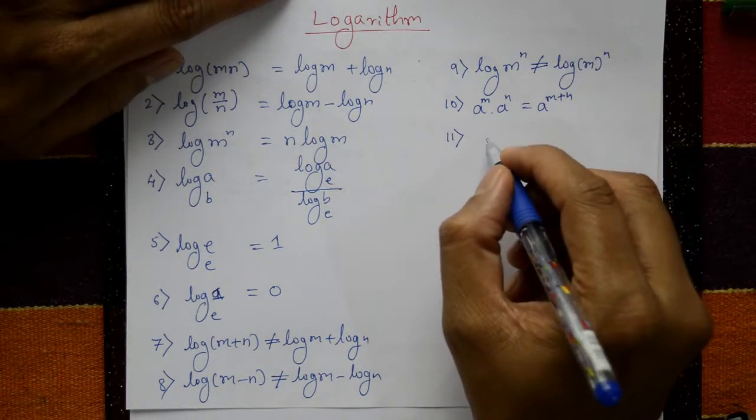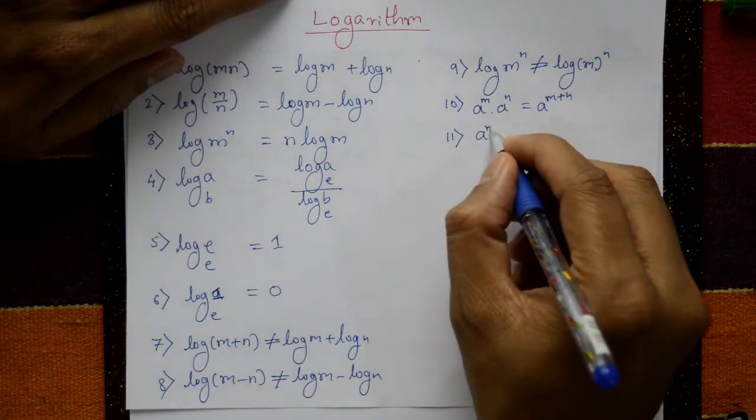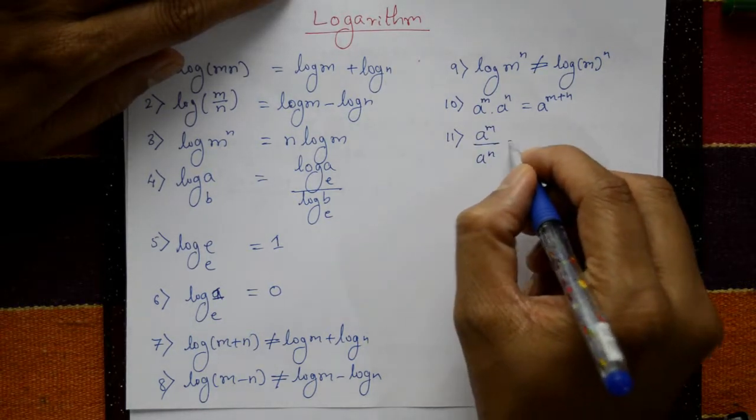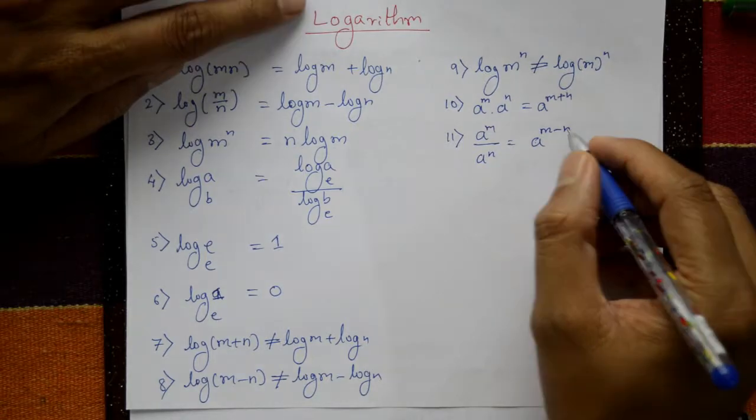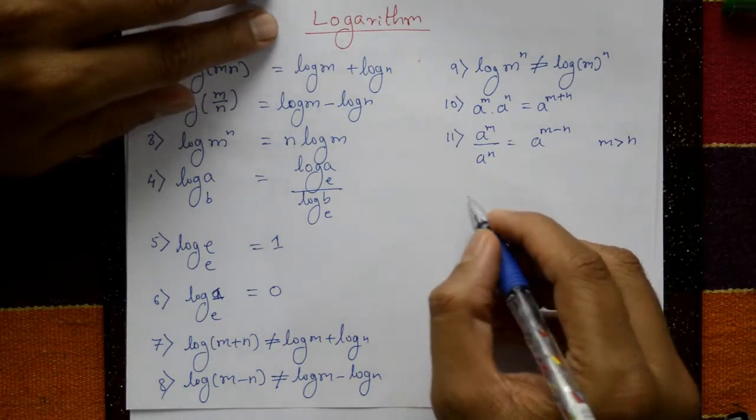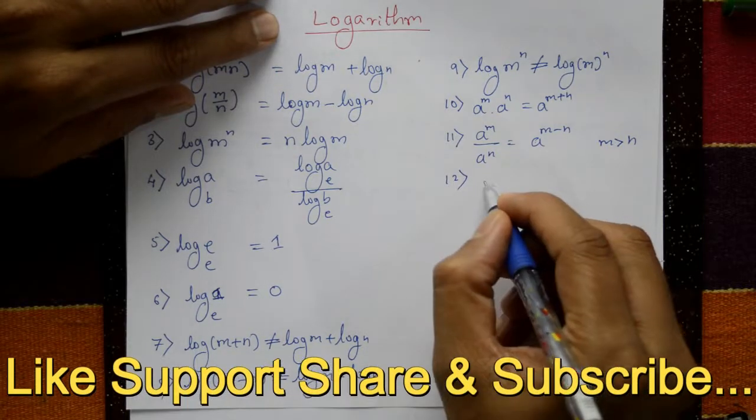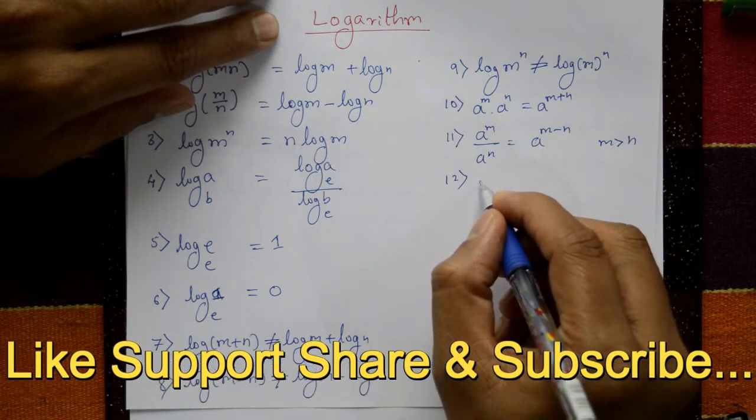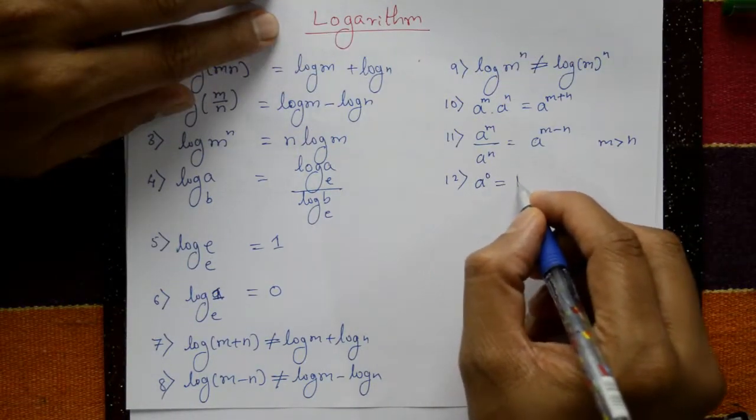Next one, a raised to m divided by a raised to n. You can write a raised to m minus n. In this one, m is greater than n. Next, a raised to 0 is 1.